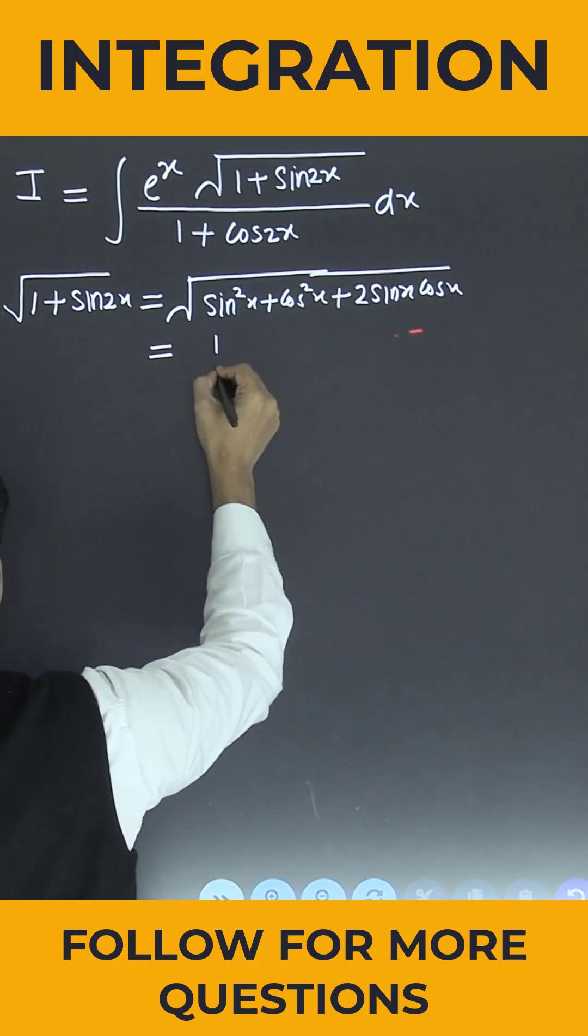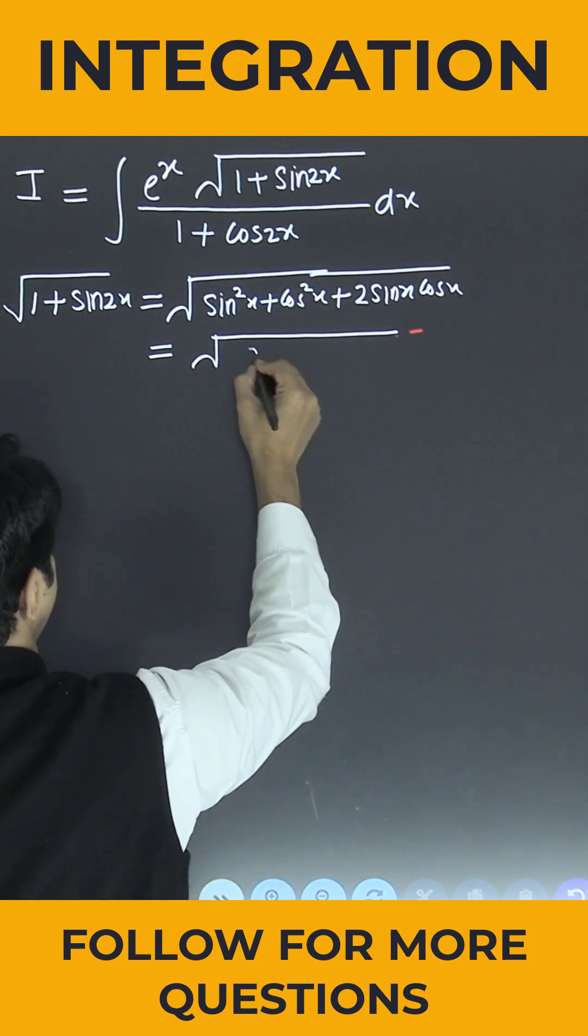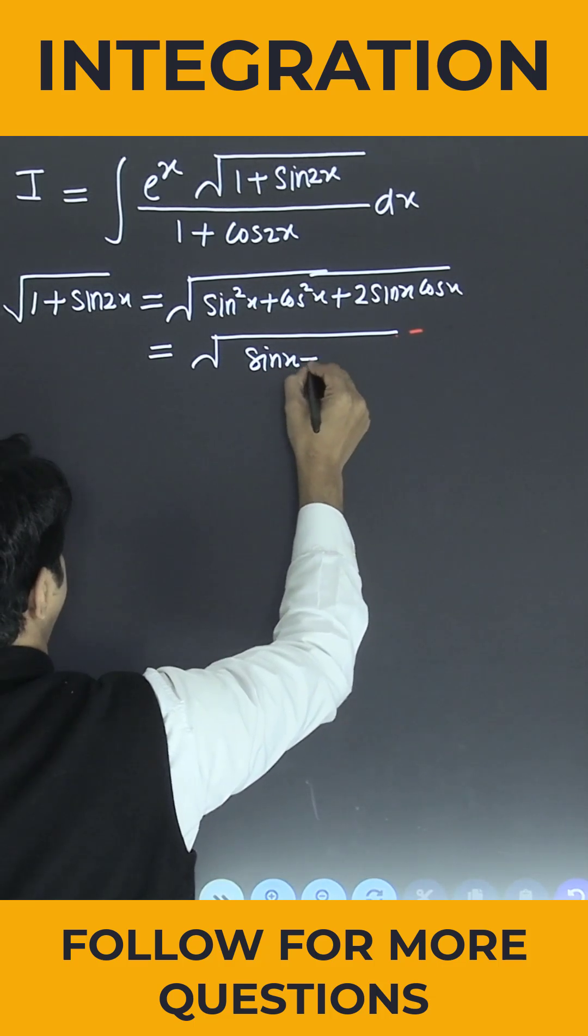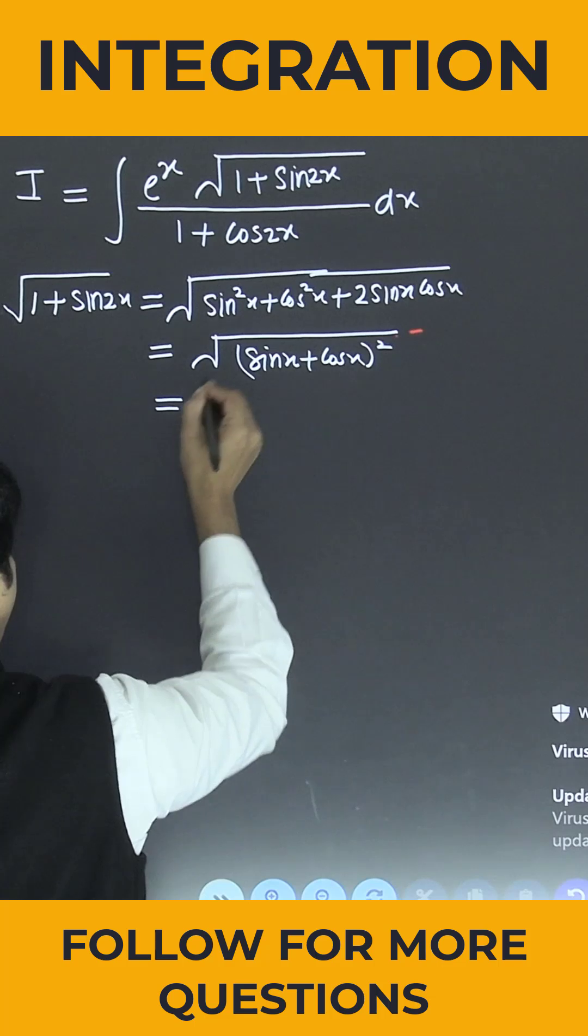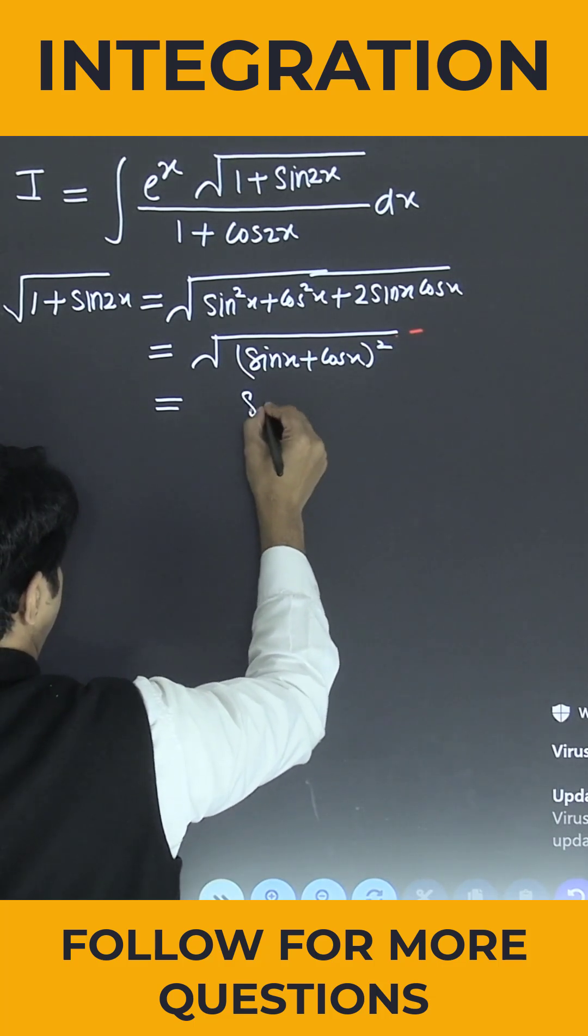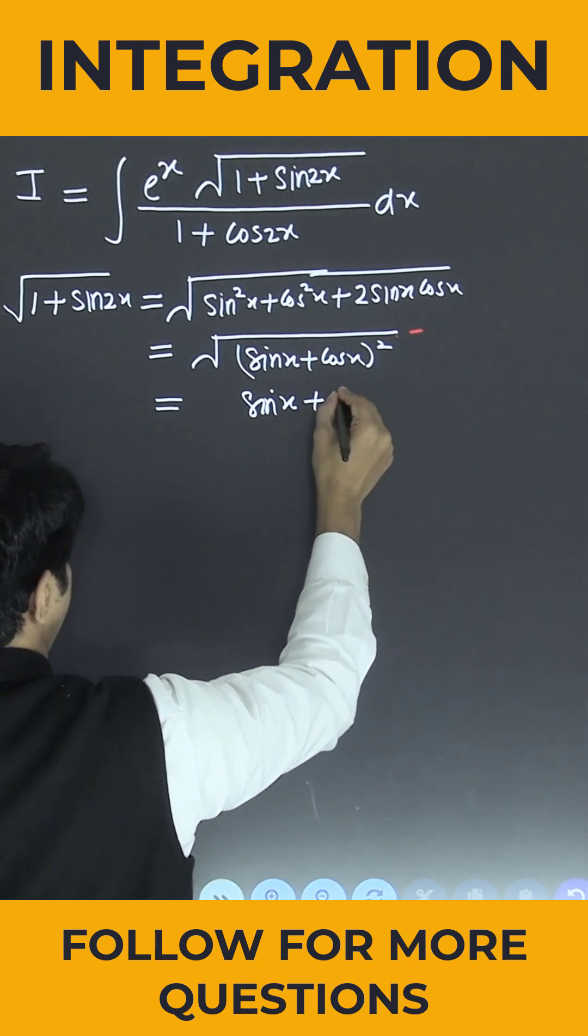So this is nothing but the integral becomes the formula of (sin x + cos x) whole square. So the final result of this is nothing but sin x + cos x.